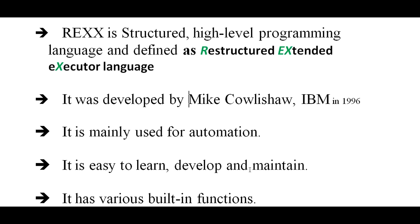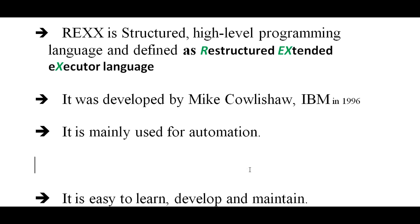For example, you might have a job card that you need to write every time you create a JCL job. Using REXX, you can create a macro named 'job card', and when you go to a member and type 'job card', it will automatically copy the job card content onto the first two or three lines. That is one simple example of how REXX macros can save time.